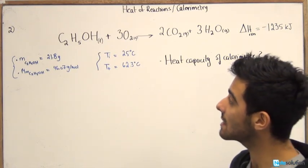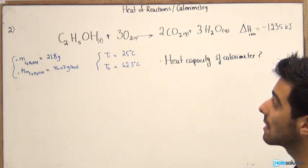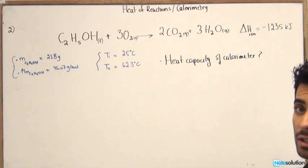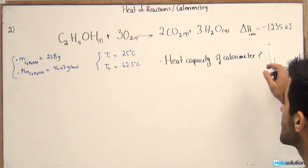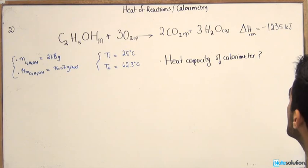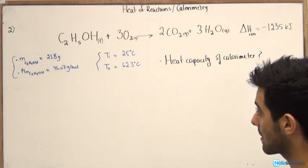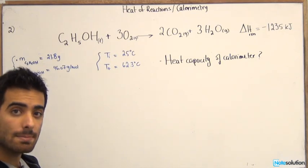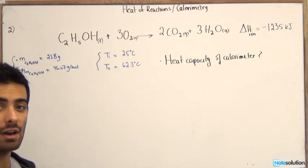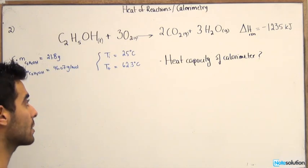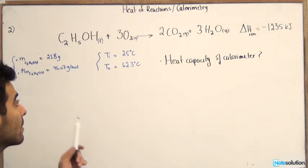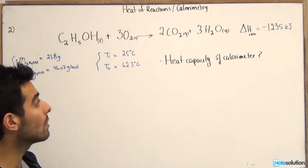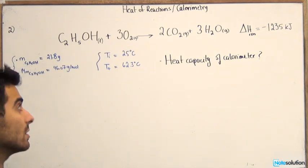So in this case we have the combustion of ethanol in a bomb calorimeter and we already know that this reaction produces negative 1235 kilojoules. Now in this experiment we're given the initial and final temperatures of the reaction. So the initial temperature before the reaction started was 25 degrees Celsius, the final temperature is 62.3 degrees Celsius.